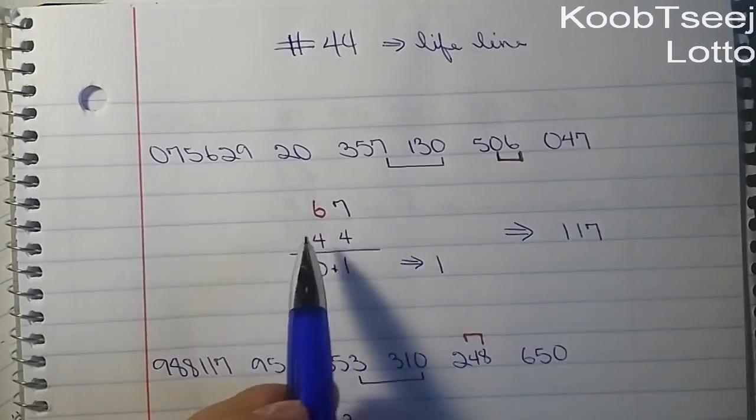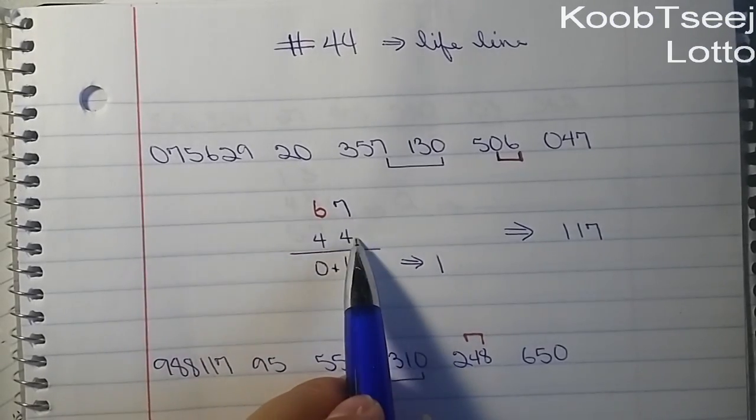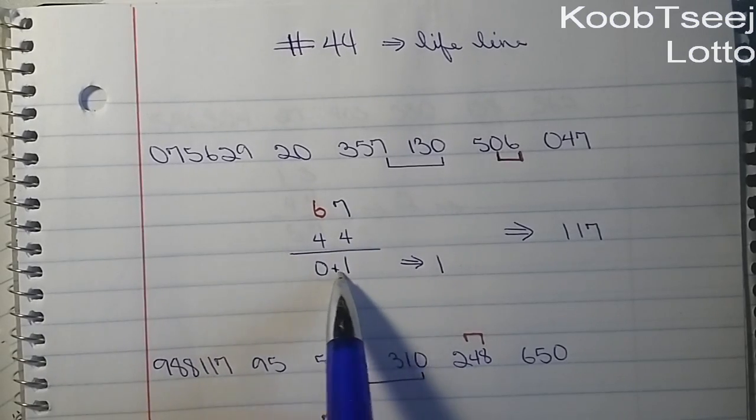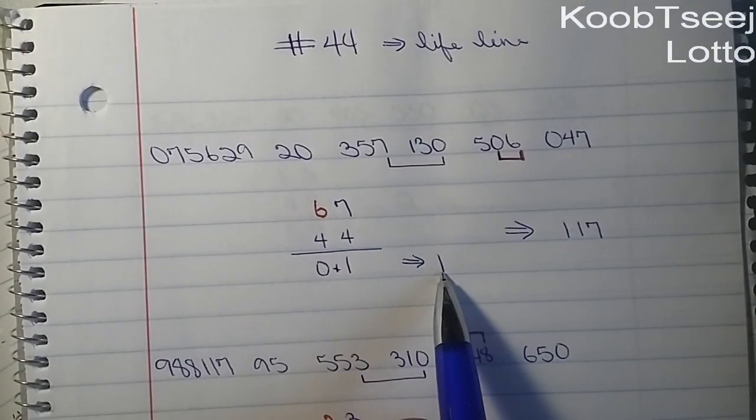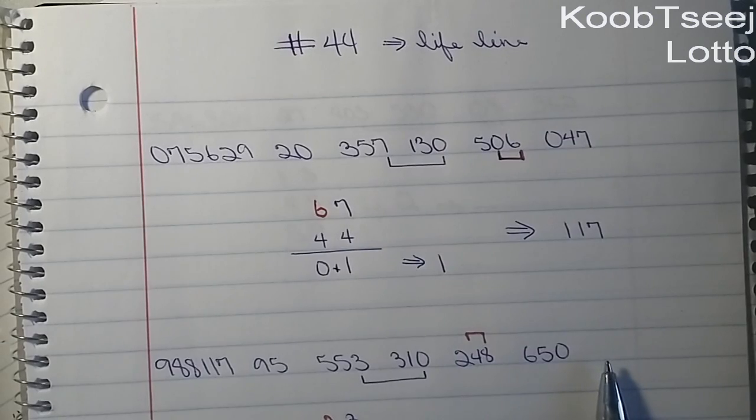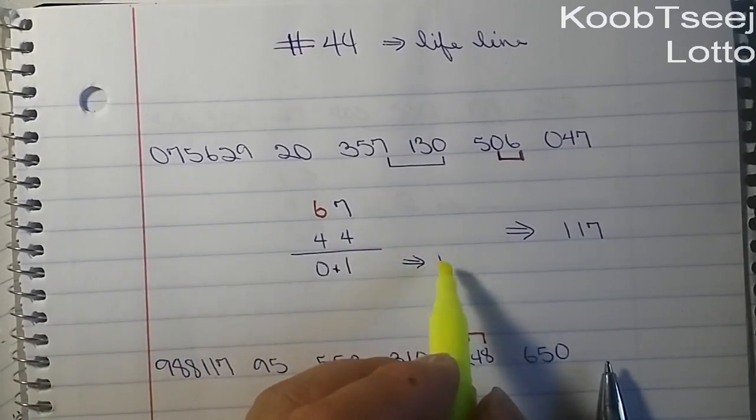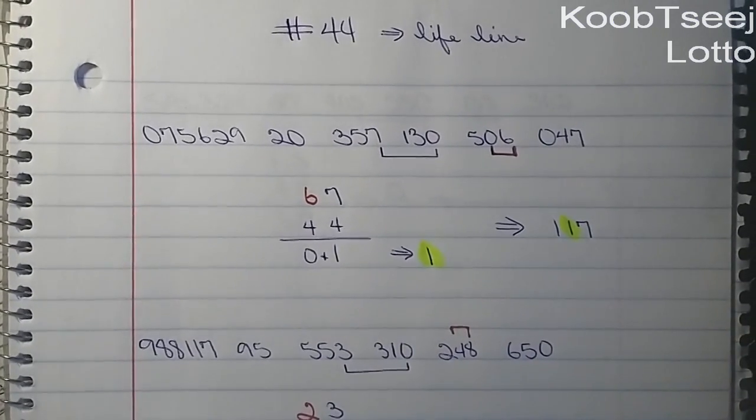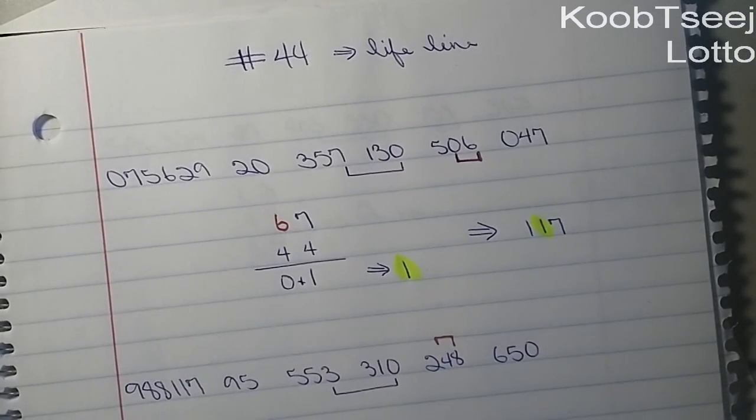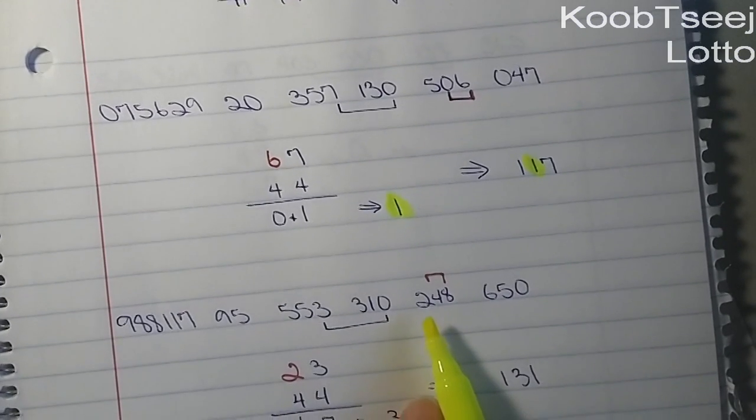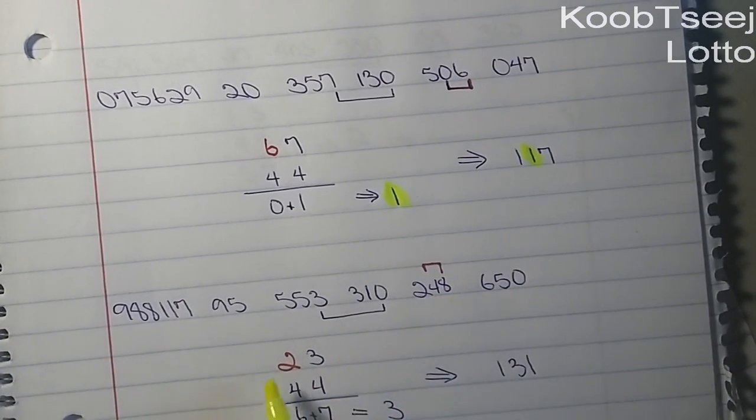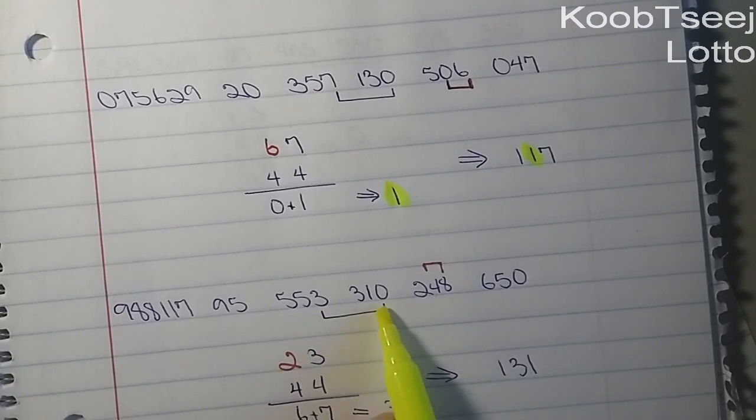Then 7 plus zero is just 7. We put 44 down here. We add it: 10, 11. When we add this across, we got 117. So the 1 is in the middle, one digit in the middle.